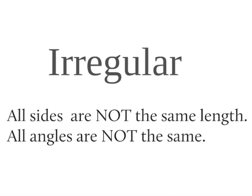If polygons aren't regular, they'll be irregular. And that means that all the sides are not the same length. And all the angles are not the same.